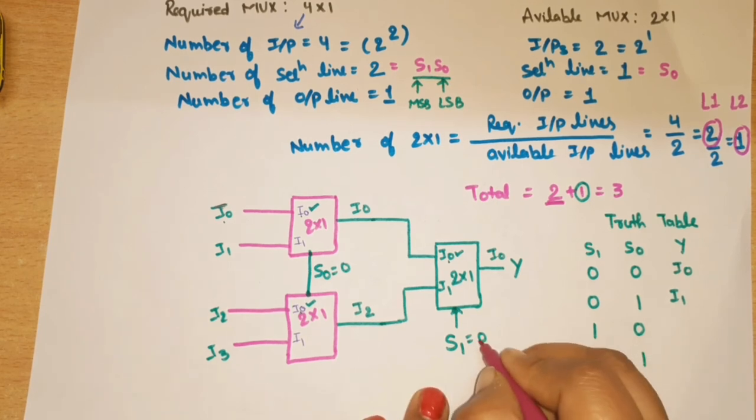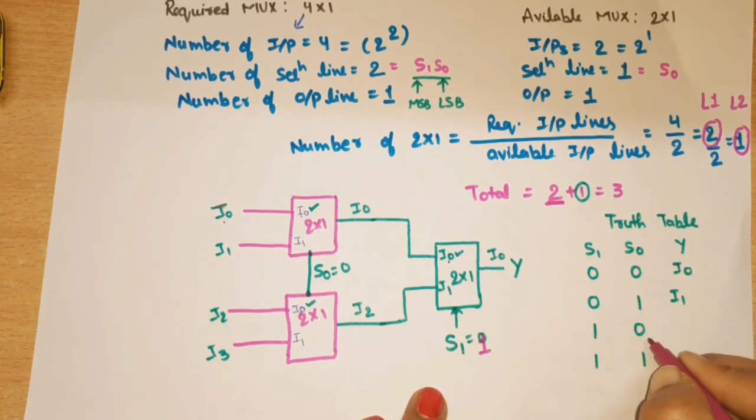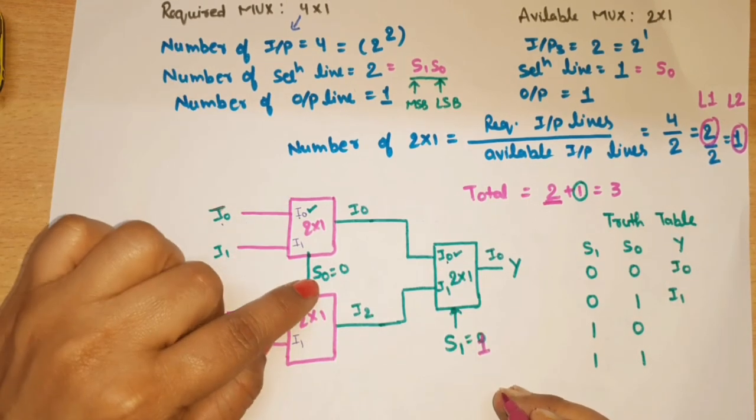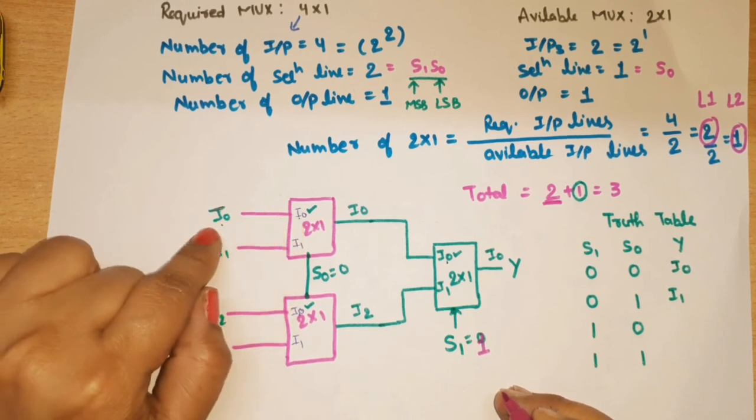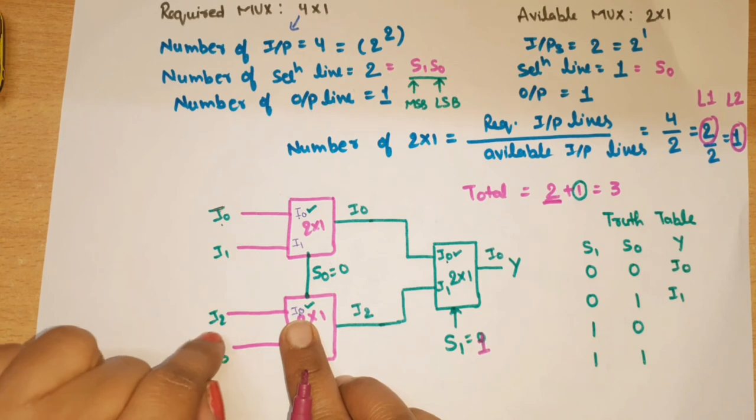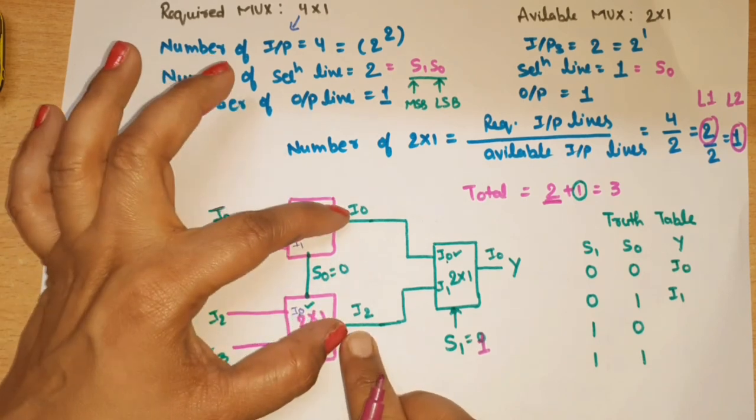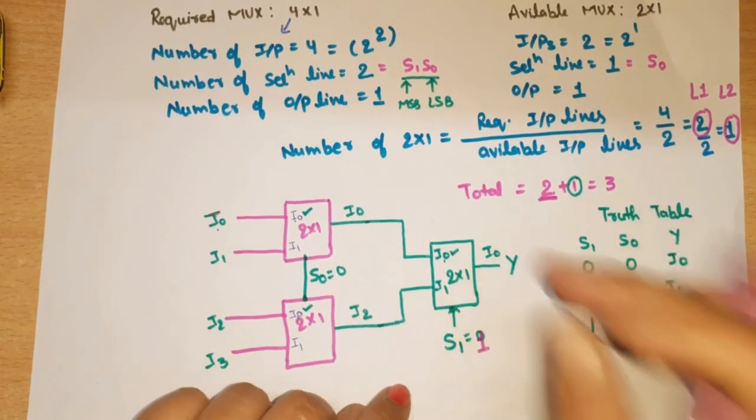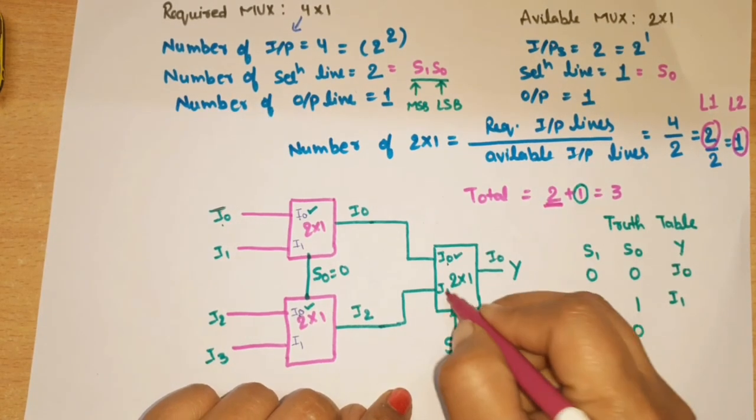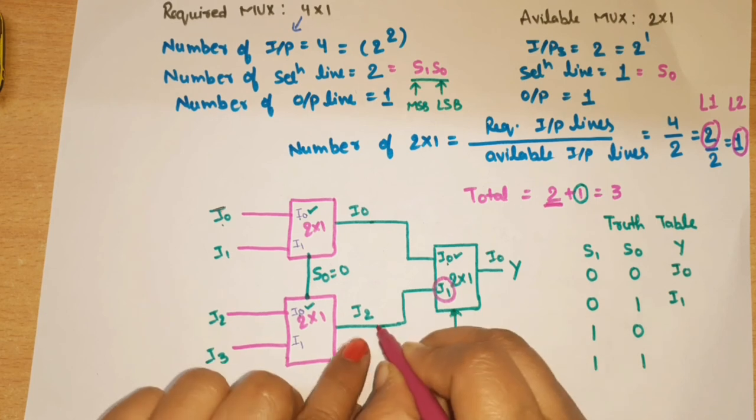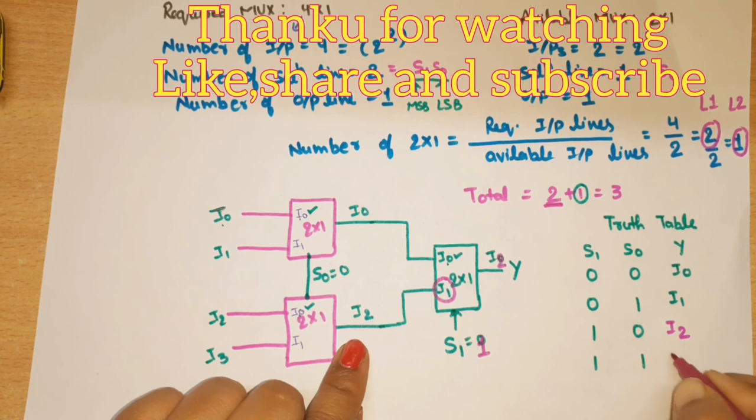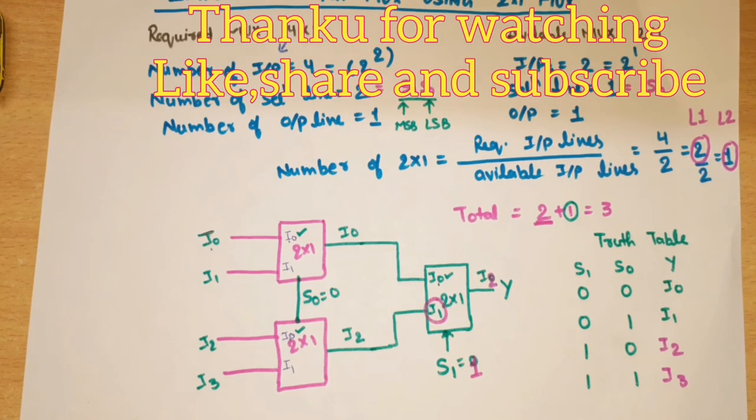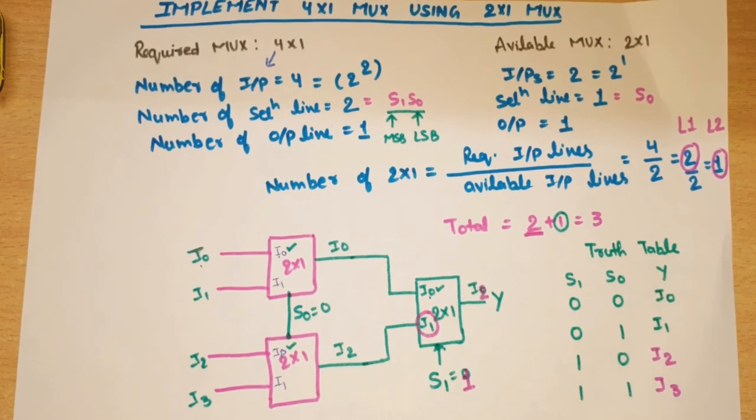If this is 0, I0 is selected. This I0 is connected with actual I0, this I0 is connected with I2, so here we get I2. If we have the value 1, which input is selected? This input, which is I2. What is the output? I2, I3. So this is the 4-to-1 MUX using 2-to-1 MUX. If any doubt, please write in comment box. Thank you so much and have a good day.